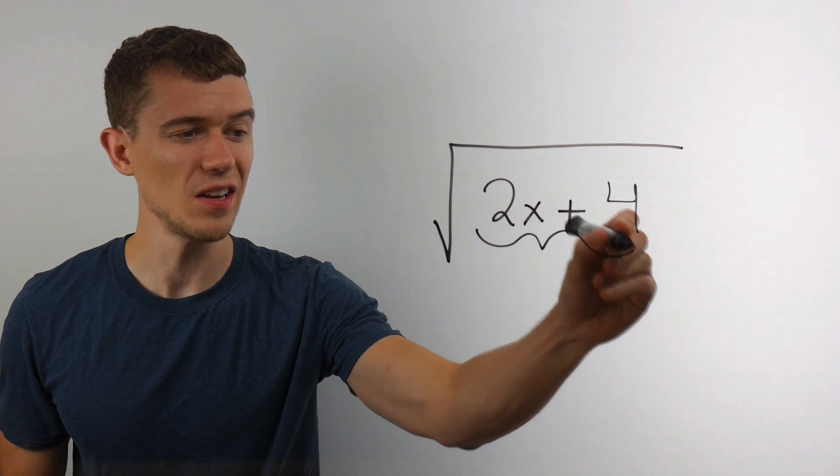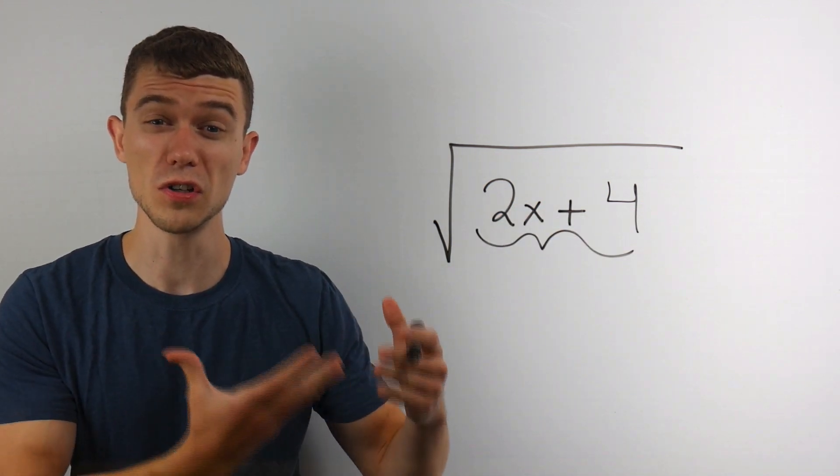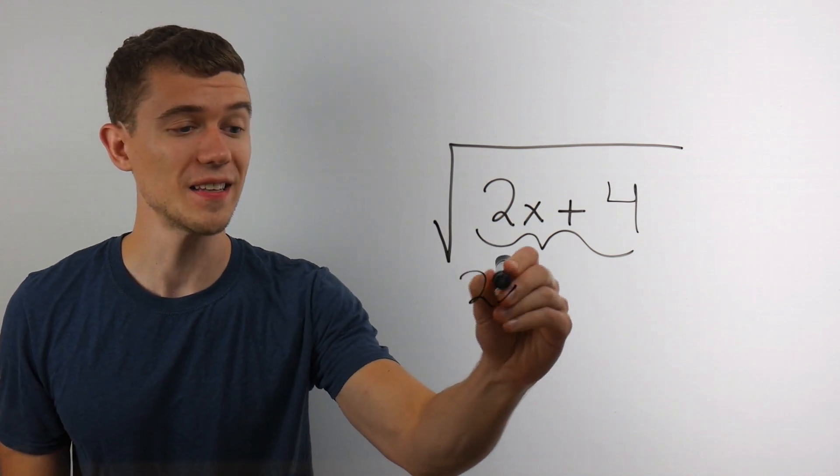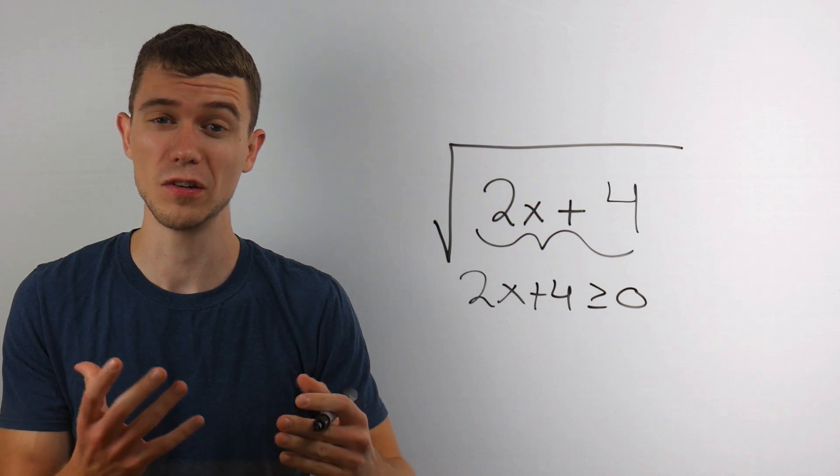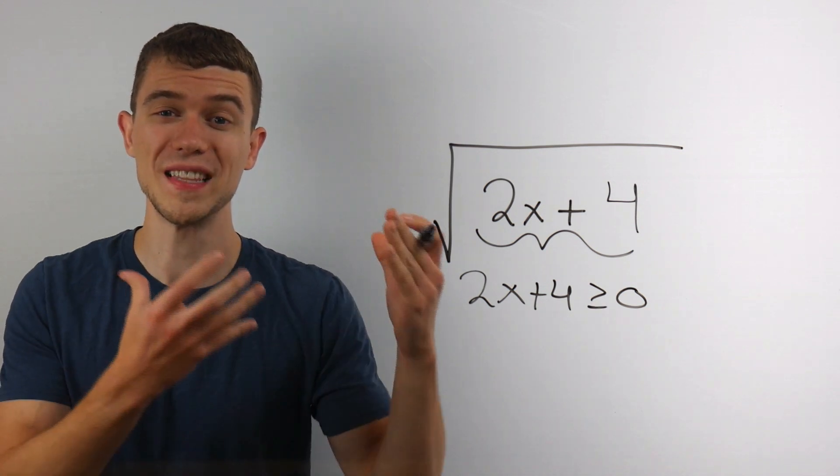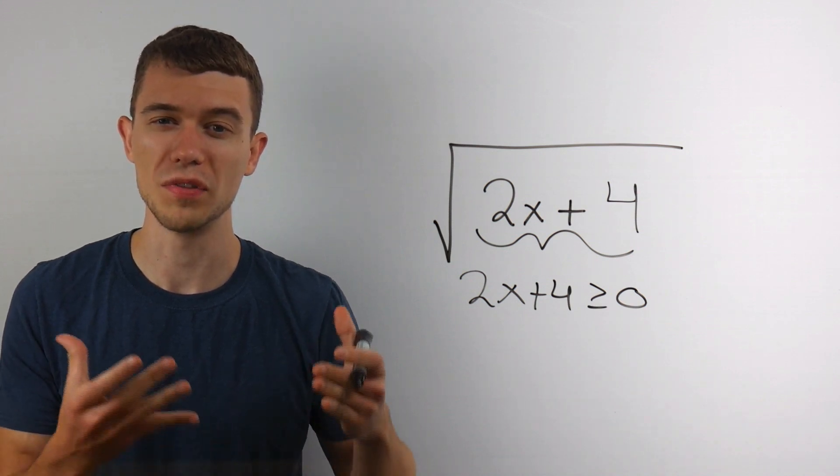So whatever's inside here cannot be negative. In other words, for this function to be defined, the inside bit has to be positive or at least zero. So to find the domain, we take the inside, we set it greater than or equal to zero, and we just solve this inequality.